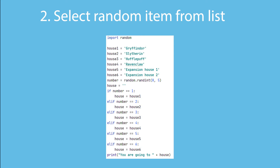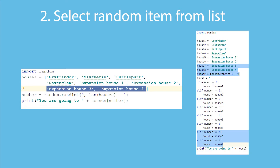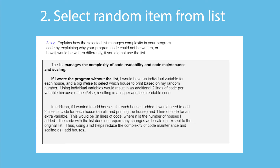As with the previous example, using a list is also a win for code scaling and maintainability. If Hogwarts expanded and needed new dorms, I could just add the dorm to the list and the rest of the code would not change at all. Without a list, I'd have to change the random number line and extend the if-else. So lists help manage the complexity of code maintenance and scaling. My answer for 3b5 would look almost exactly the same as the previous answer.